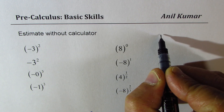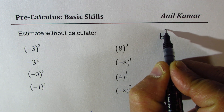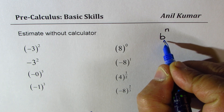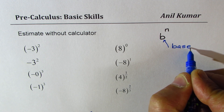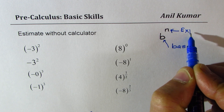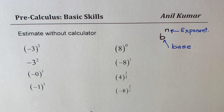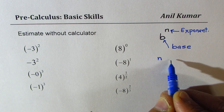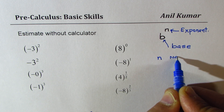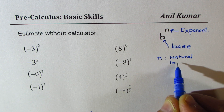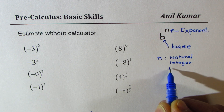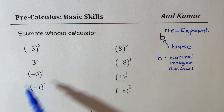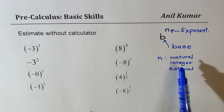In general, we can write exponential form as b to the power of n, where b will be called as the base and n will be treated as an exponent. Now, n could be a natural number, an integer, or a rational number. We'll find exponents with all these types of exponents.